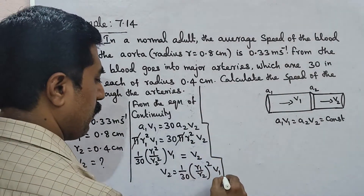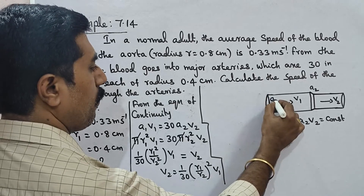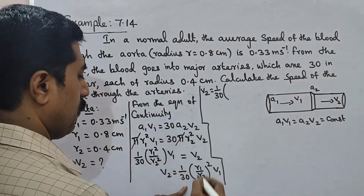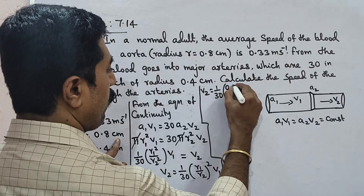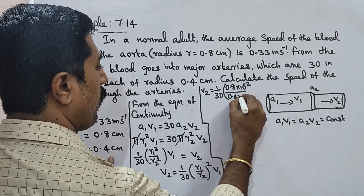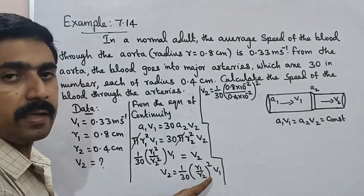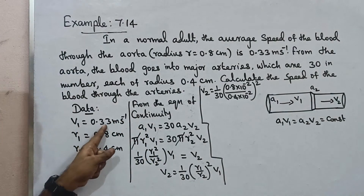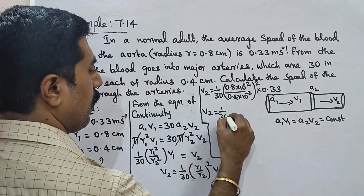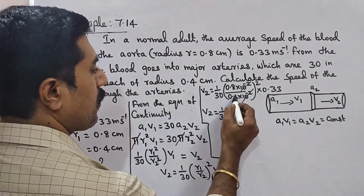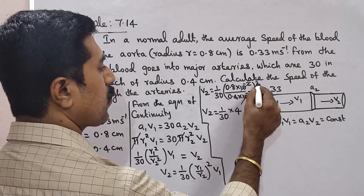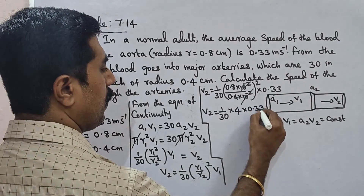Now substituting the values: V2 is equal to 1 by 30 into (0.8 × 10⁻² divided by 0.4 × 10⁻²) whole squared into V1, where V1 is 0.33. The 10 to the power minus 2 cancels, and 0.8 divided by 0.4 gives 2, so 2 squared is 4.